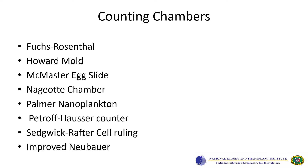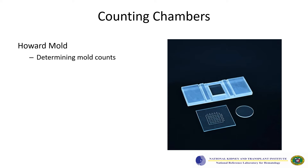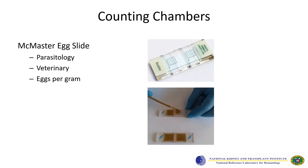These are examples of different counting chambers with different purposes. One counting chamber is used to count RBCs and WBCs from cerebrospinal fluid and can also be used to assess trypanosomiasis. The Howard mold counting chamber is used to determine mold counts, and the McMaster egg slide is used in parasitology or veterinary medicine to quantify eggs per gram of feces.